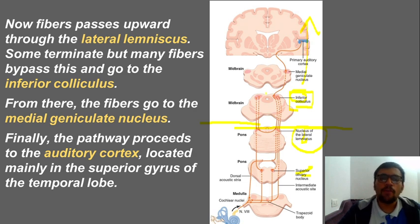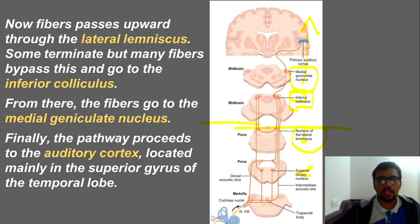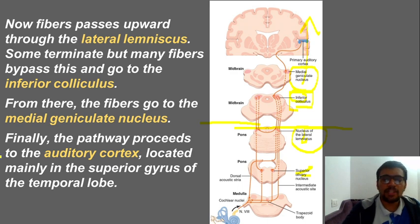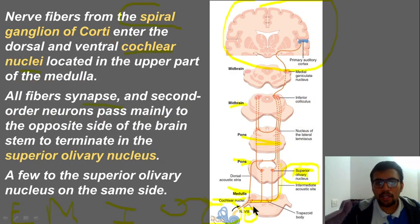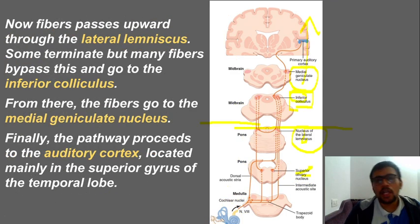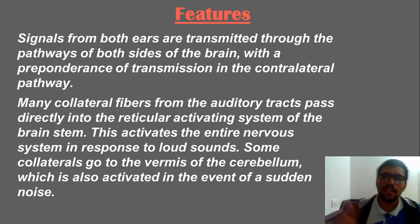From the inferior colliculus, fibers go to the medial geniculate nucleus in the midbrain. From there, the pathway proceeds to the primary auditory cortex, located in the superior temporal gyrus of the temporal lobe. So the complete pathway is: cochlear nuclei → superior olivary nucleus → lateral lemniscus → inferior colliculus → medial geniculate nucleus → auditory cortex.